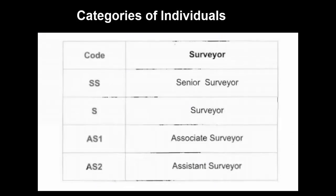There are four categories of surveyors: SS (Senior Surveyor), S (Surveyor), AS1 (Associate Surveyor), and AS2 (Assistant Surveyor).